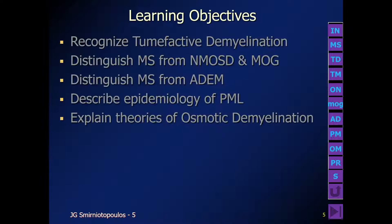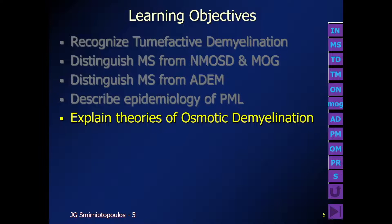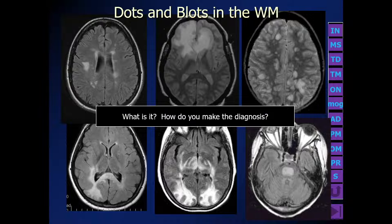Our educational objectives are: to recognize tumefactive demyelination; to distinguish multiple sclerosis from neuromyelitis optica spectrum disorders and myelin oligodendrocyte glycoprotein antibody disease; to distinguish MS from acute disseminated encephalomyelitis; to describe the epidemiology and imaging patterns of progressive multifocal leukoencephalopathy; and to explain some of the theories of osmotic demyelination.